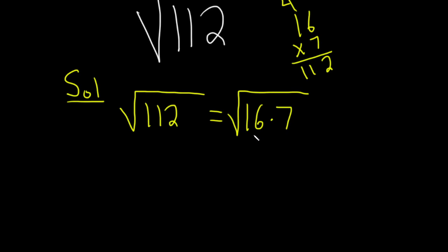And then we can break this up because they're both positive, there's no issues. This is the square root of 16 times the square root of 7.